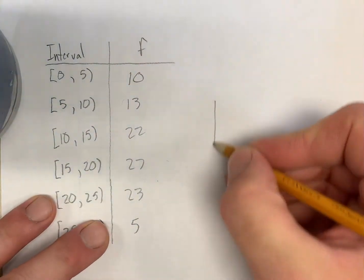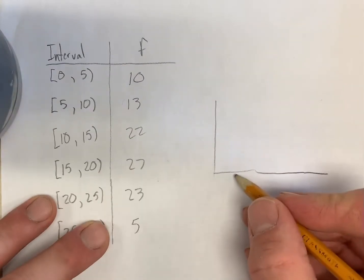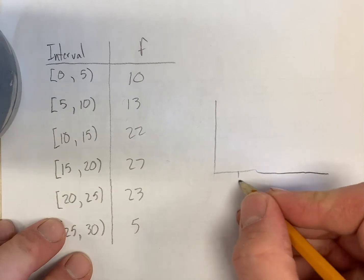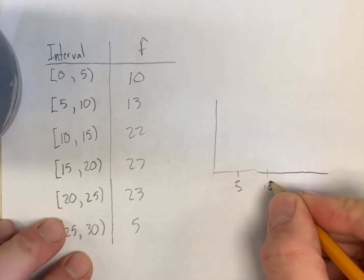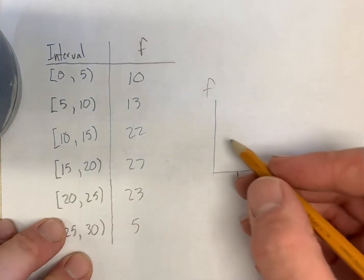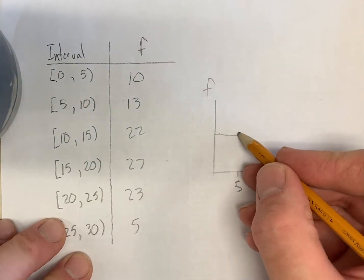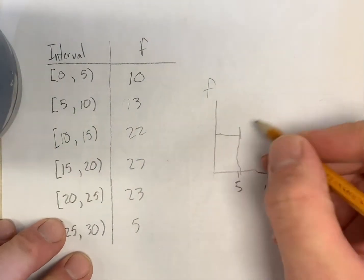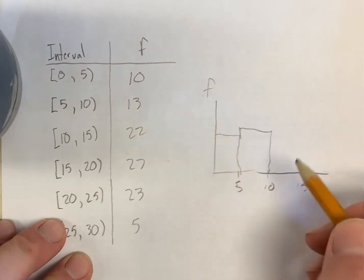So it looks kind of like this and we would have our end values for all of our intervals listed. So 5, 10, 15, and so on. And then we would mark our frequencies along the vertical axis, so we'd have 10, and these bars would be adjoining and butting up nicely, and then this would be 13, and so on and so forth.